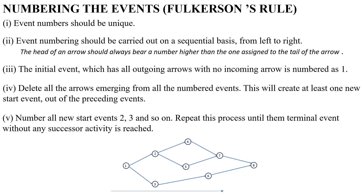Rule number 5 is, number all new start events 2, 3, and so on. Then repeat this process until the terminal event without any successor activity is reached.